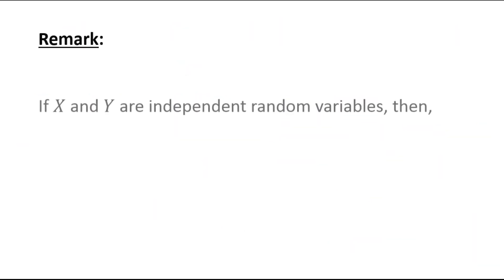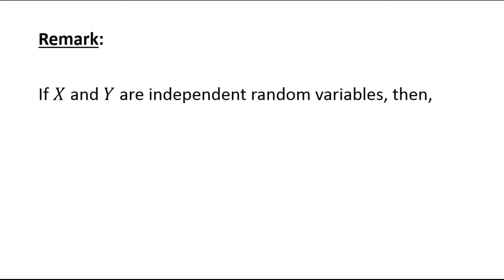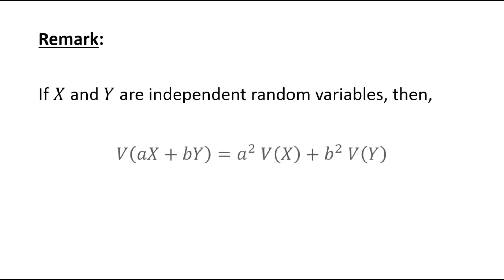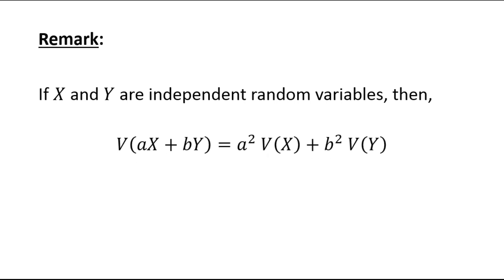Remark: If x and y are independent random variables, then the variance of this linear combination of random variables will be equal to a squared times variance of x plus b squared times variance of y, because when x and y are independent, the covariance will be 0, so the last term vanishes.